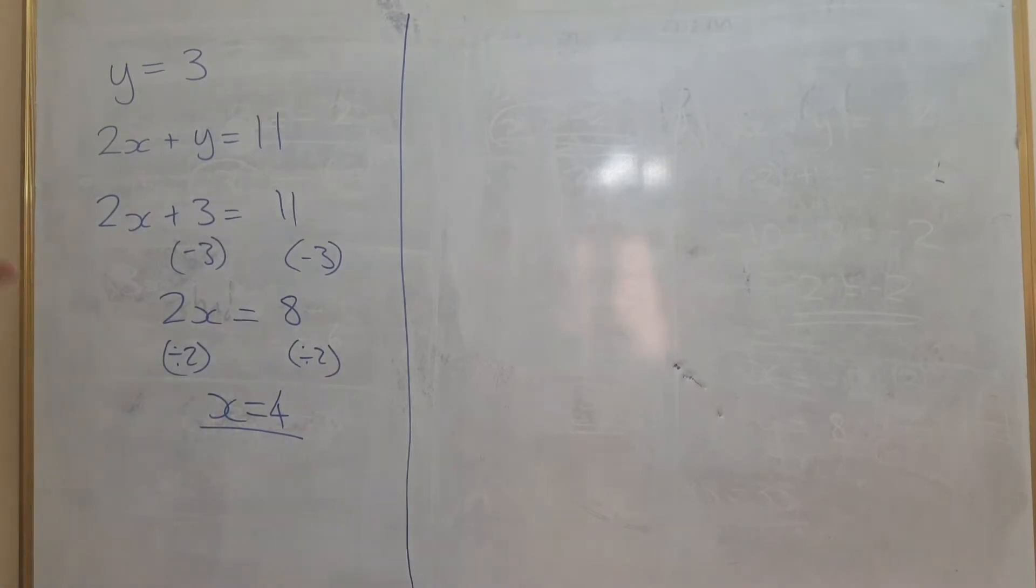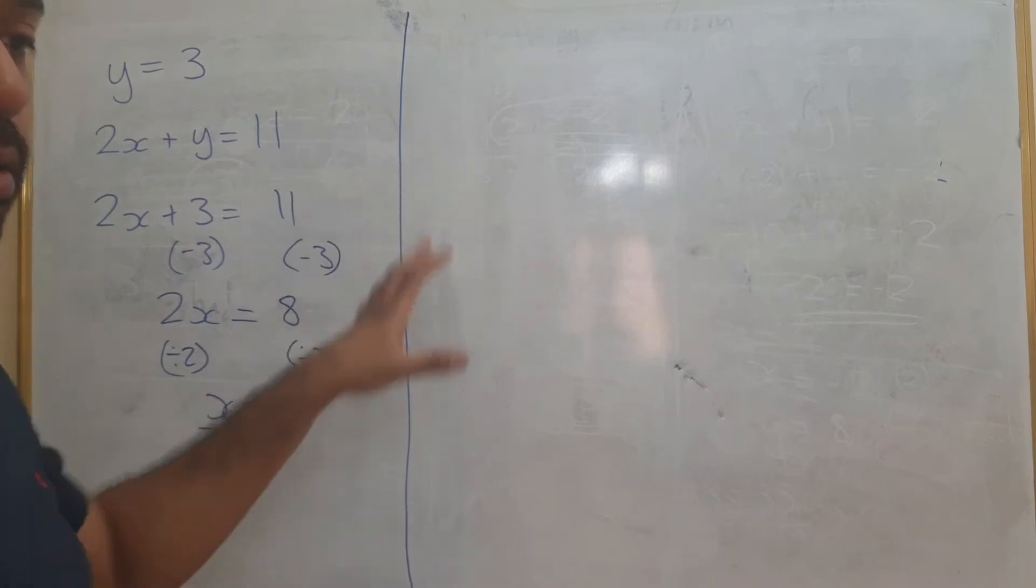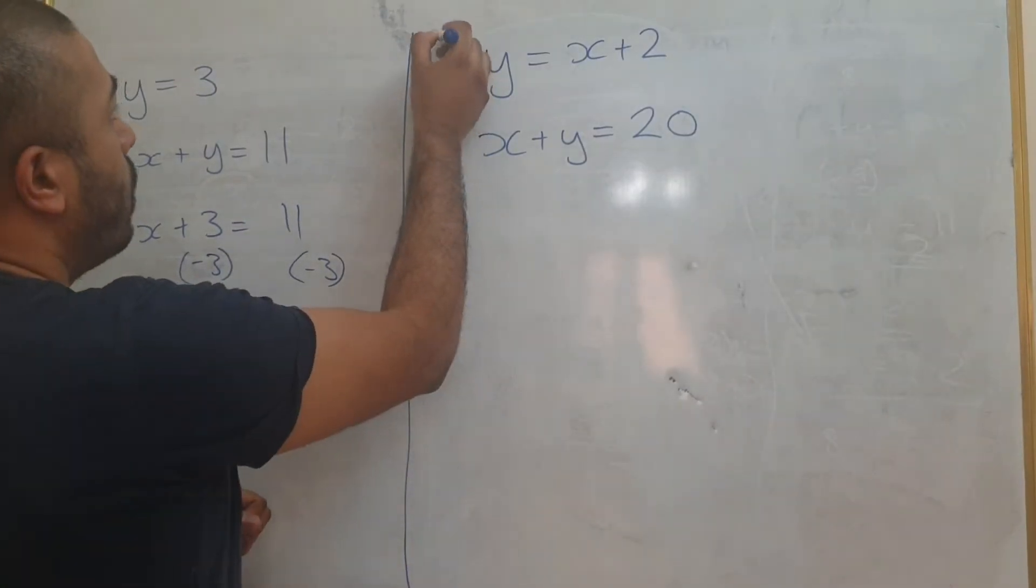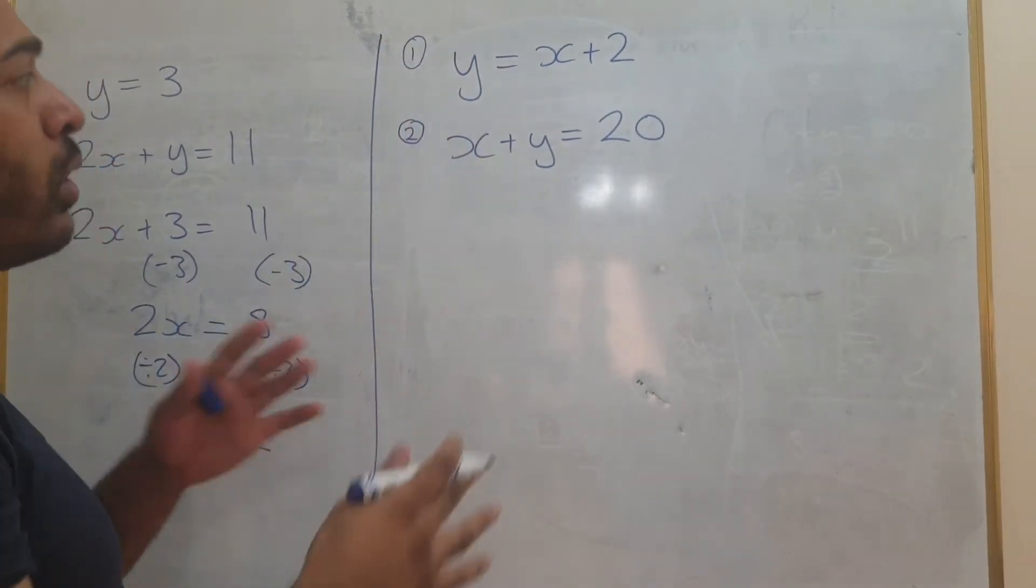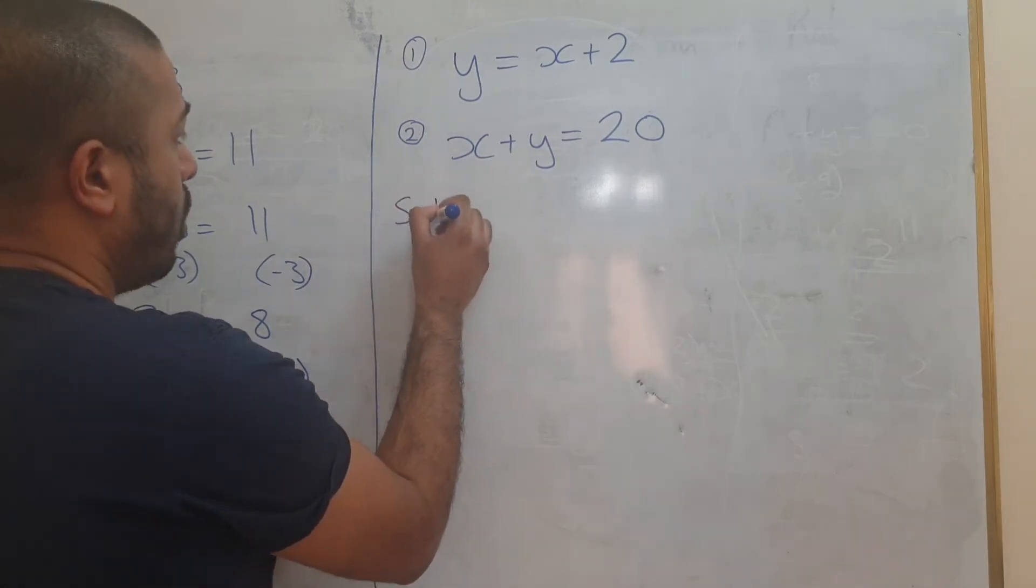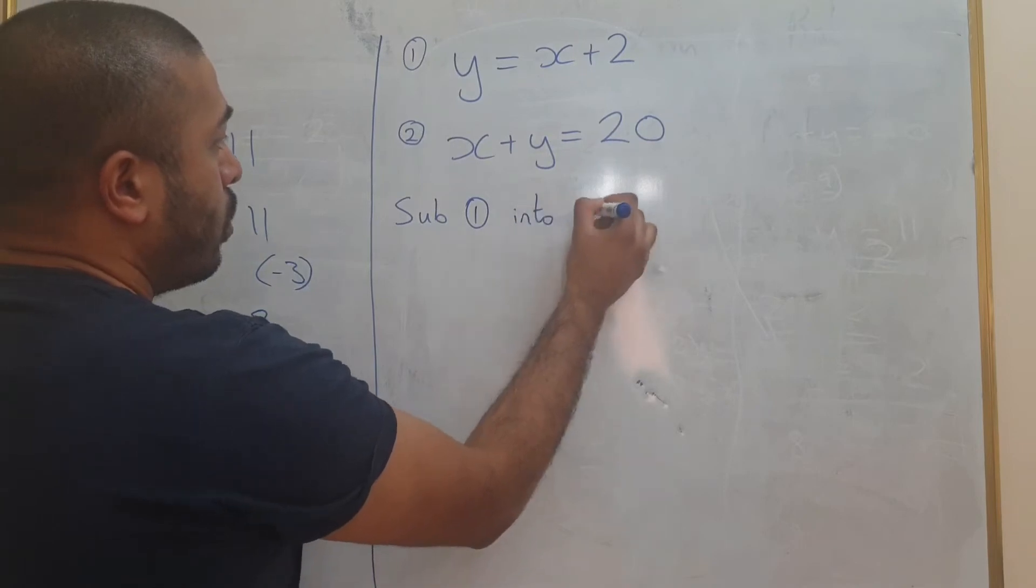Using the same logic, we're now going to work out another question here using the substitution method. So in this situation, you can still label these equation 1 and equation 2. But the wording or the way you're going to explain it is going to be different. So you're going to say 1 into 2.